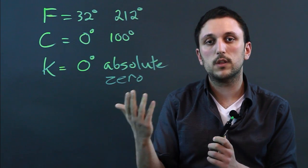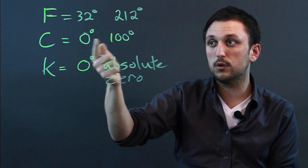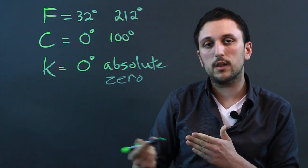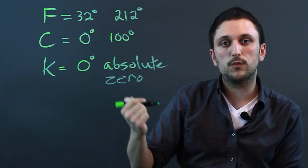So for astronomers who are measuring things in the universe that there's no water, so zero and 100 don't matter, Kelvin is the best. Pretty much for any science that is outside of the Earth, Kelvin is the most useful measurement.